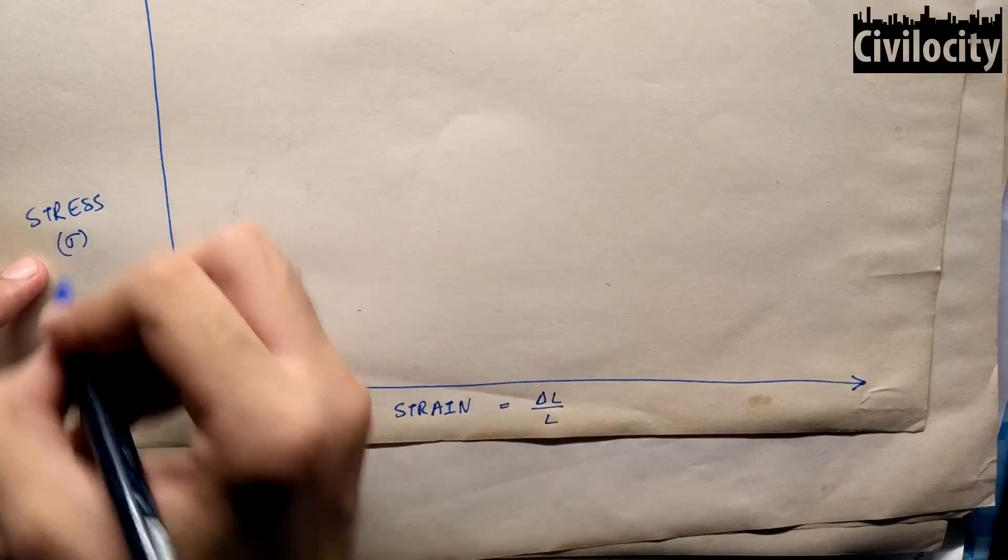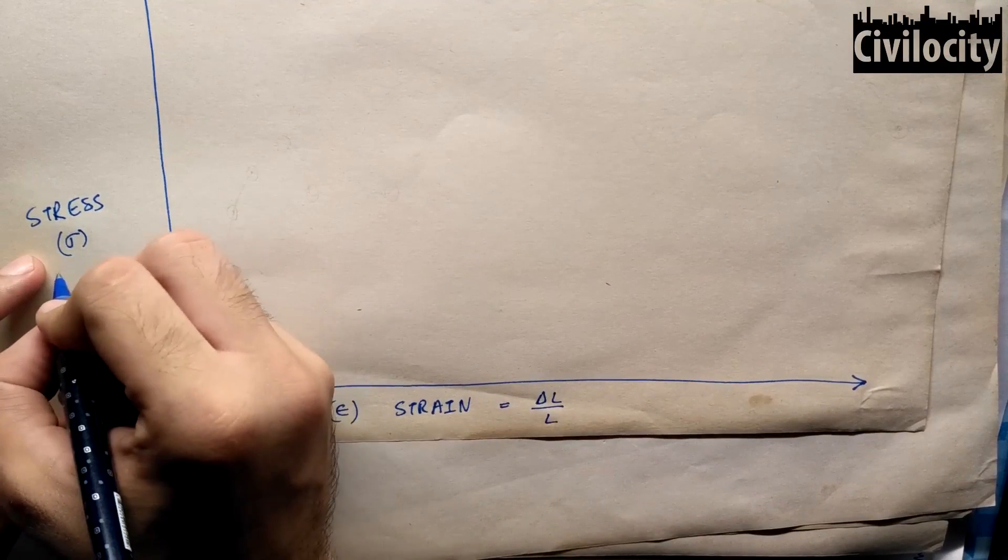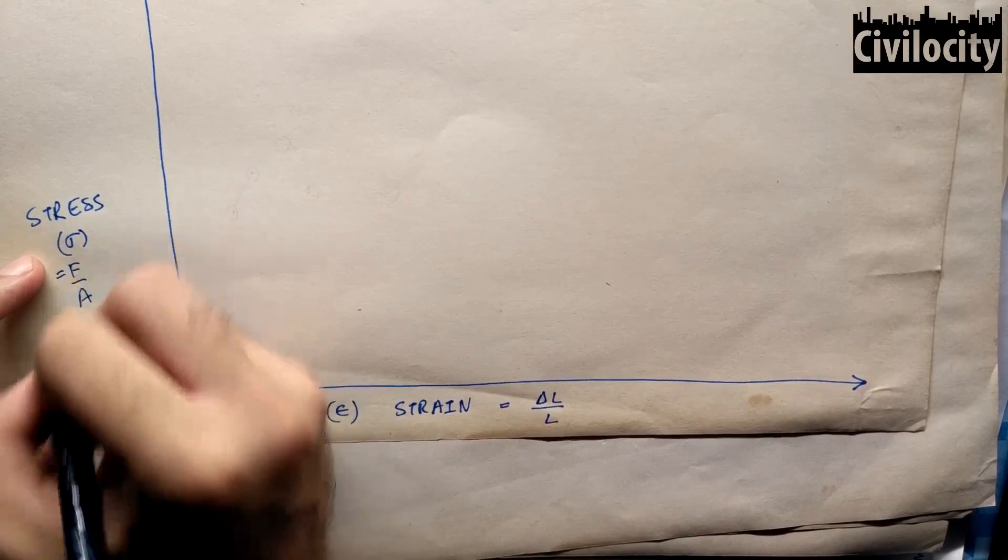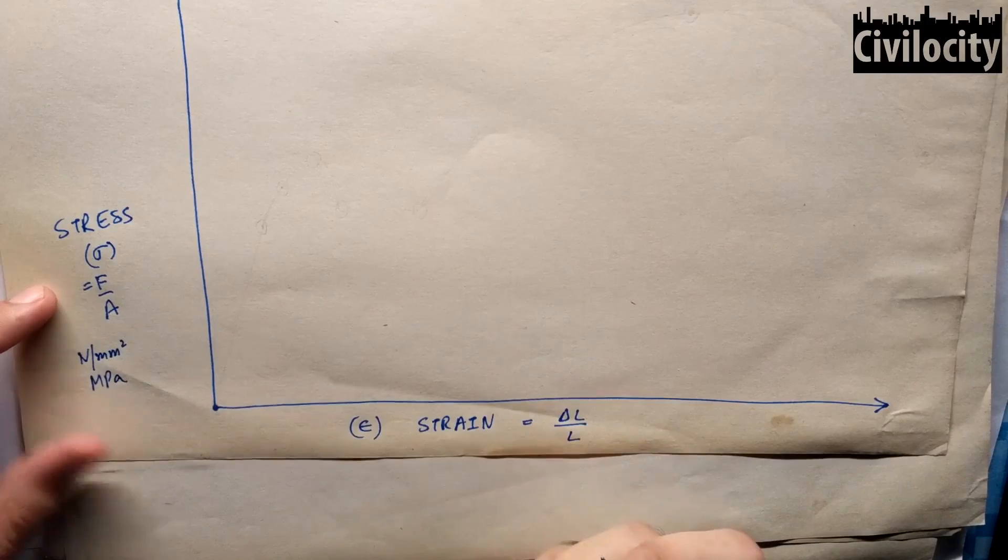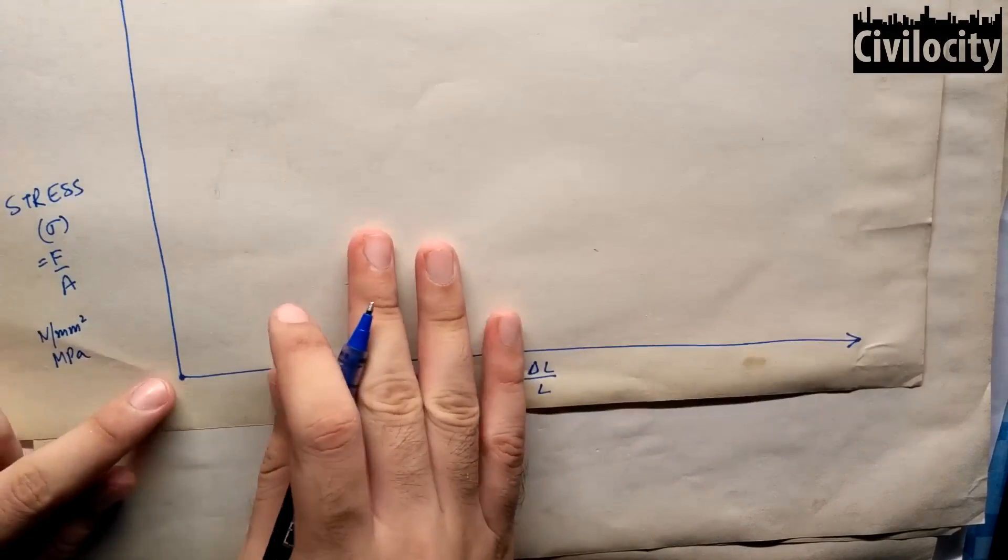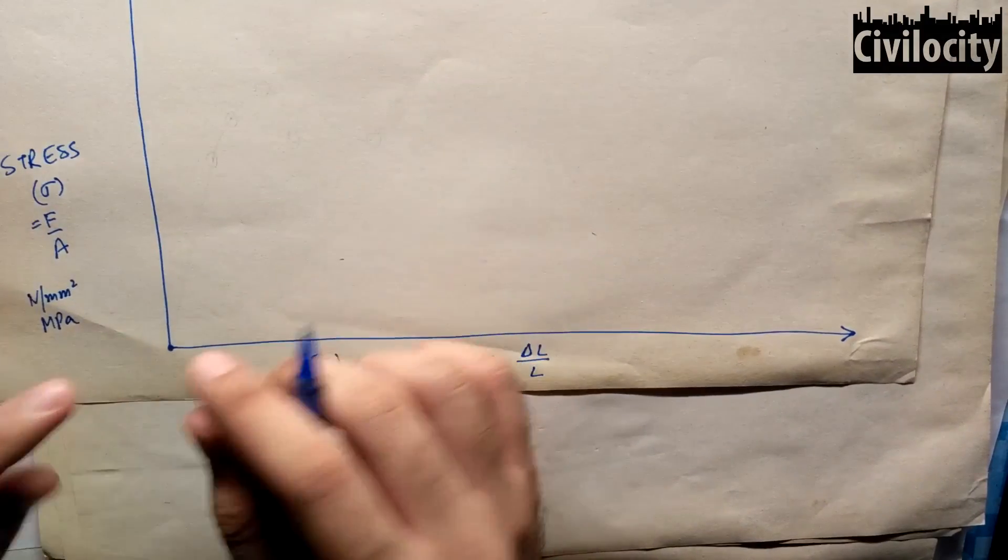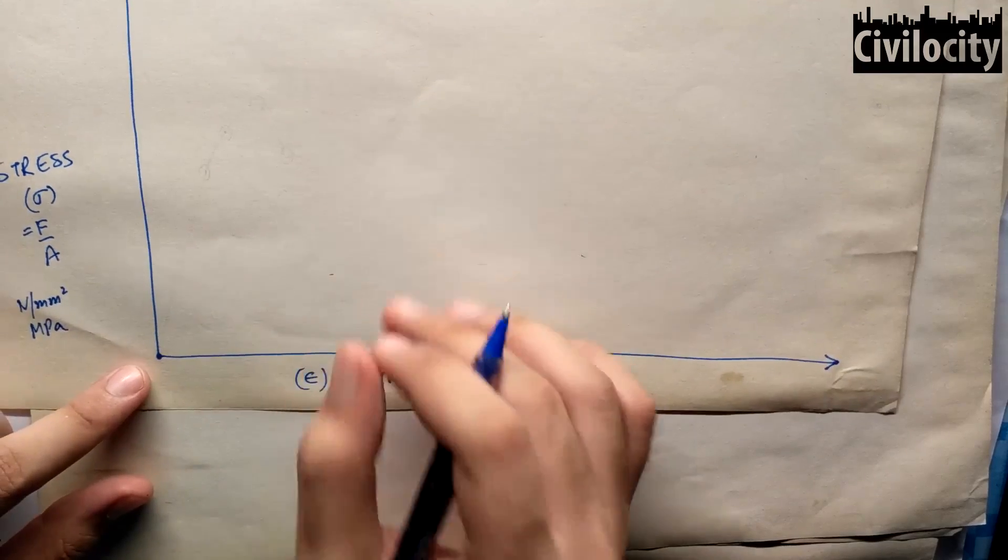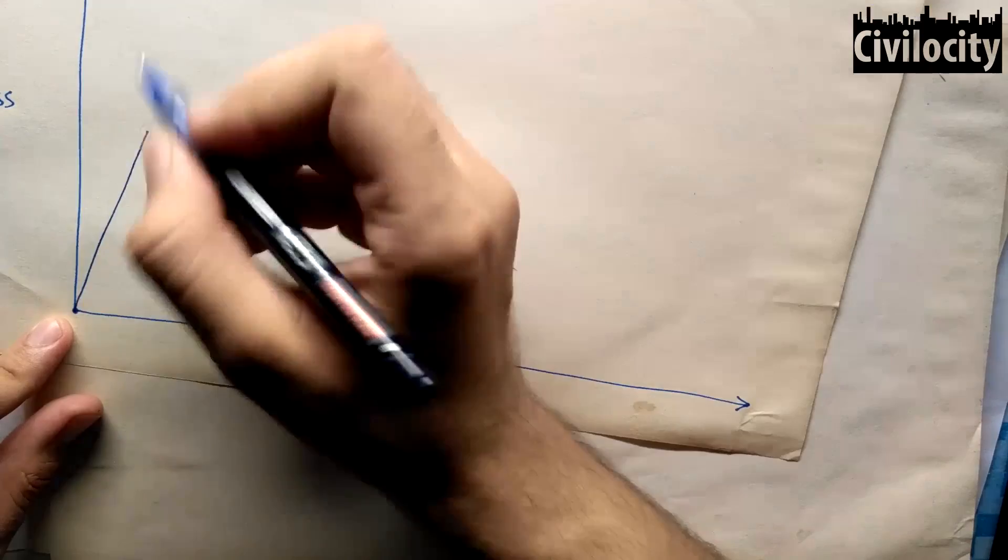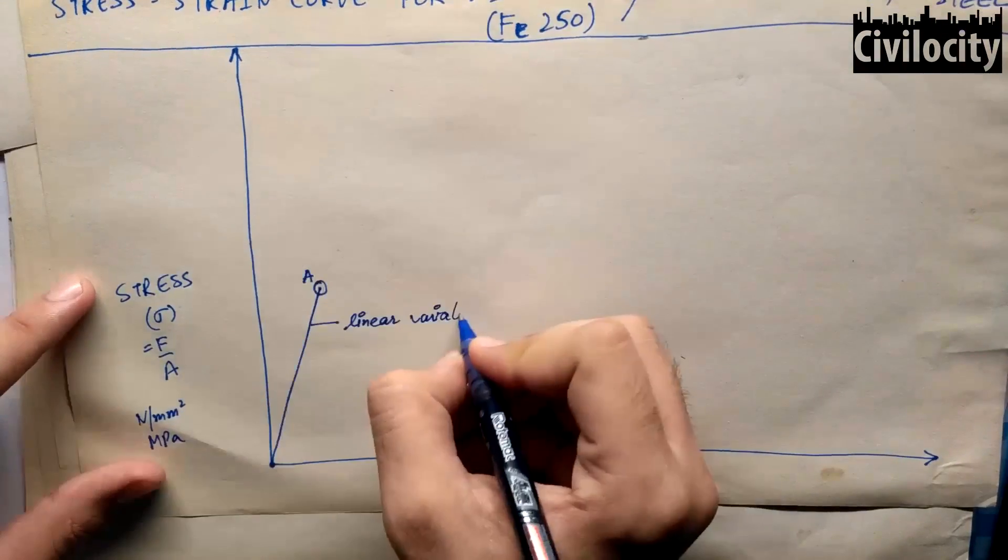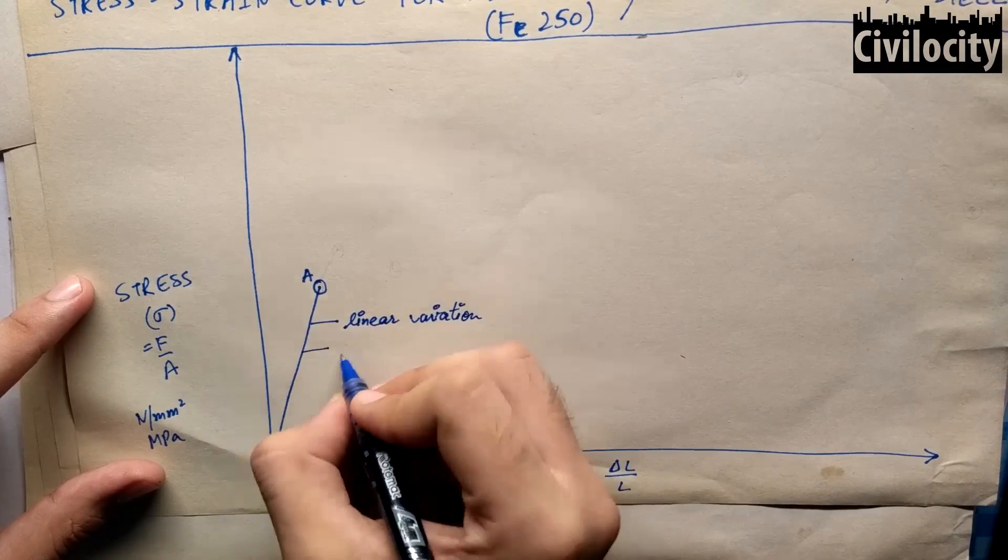Just to remind you that stress is the force applied per unit area and strain is the change in length divided by the total length. Strain has no dimension, stress is measured in Newton per mm square or MPa. As we start applying tensional force on our specimen, the strain increases in proportion to the stress. That is stress is directly proportional to strain up to point A. The curve shows a linear variation and the zone is called the linear elastic zone.